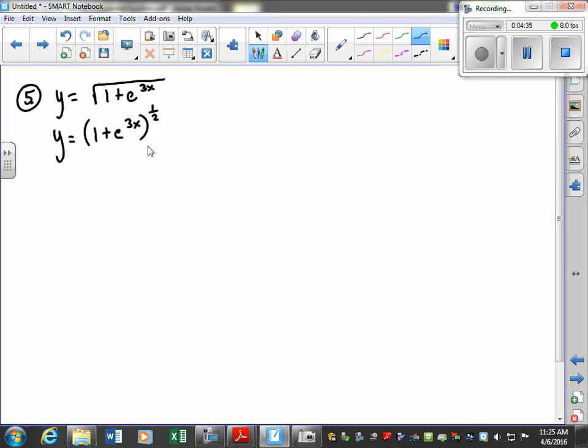Okay, and then now we're going to take the derivative of this. So y prime is going to be just 1 half, whatever is in our parenthesis, we bring it back down, to the minus 1 power. So what's half minus 1? Negative 1 half times the derivative of our parenthesis.